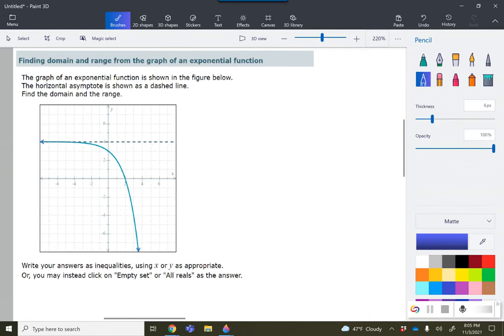Here we are finding domain and range of an exponential function. They gave us a graph which makes it a lot easier for us to visualize what's going on. The first thing I notice here is we have an asymptote at y equals 4, which is going to be a limit to our range because it stops it from going any higher than that.